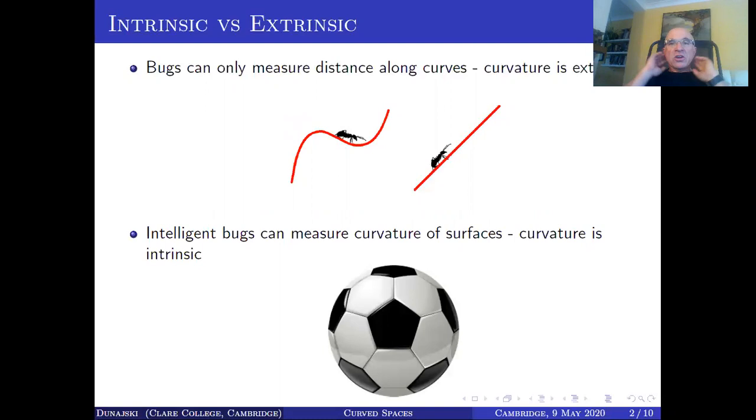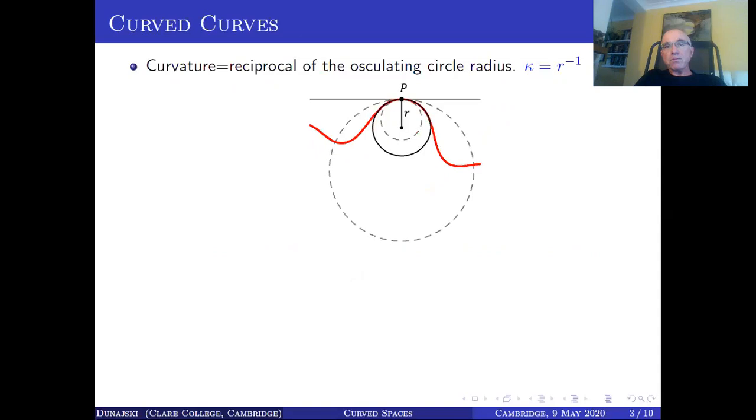It turns out that the situation changes for the bugs living on the surface of a sphere. There, the curvature is intrinsic to the sphere and if the bugs know what they are doing, they could tell their universe apart from, let's say, a plane. So I want to first explain these two concepts of extrinsic and intrinsic curvature to you.